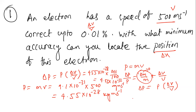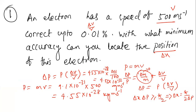We now substitute into the uncertainty principle: Δx·Δp ≥ ℏ/2. Taking the minimum, Δx = ℏ/(2·Δp). Here ℏ = h/(2π) = 6.62 × 10⁻³⁴ / (2 × 3.142) = 1.05 × 10⁻³⁴ J·s. Substituting: Δx = 1.05 × 10⁻³⁴ divided by 2 times 4.55 × 10⁻³².